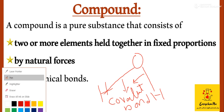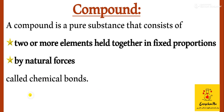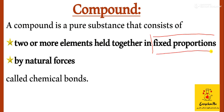So to properly understand: a compound is a pure substance that consists of two or more elements held together in a fixed proportion by natural forces called chemical bonds.